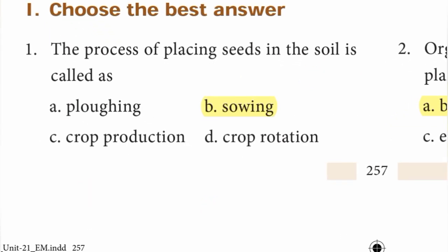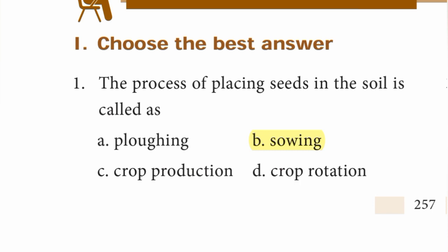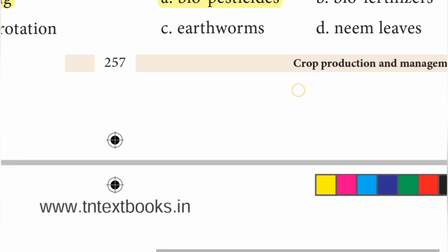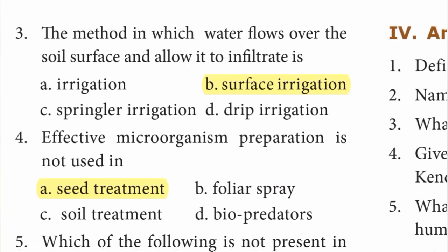Roman number 1: choose the best answer. First one: the process of placing seeds in the soil is called as sowing — B option is the right answer. Second one: organism that controls insects and pests of plant crops is biopesticides — A option is the right answer. Third one: the method in which water flows over the soil surface and allows it to infiltrate is surface irrigation — B option, answer is surface irrigation.